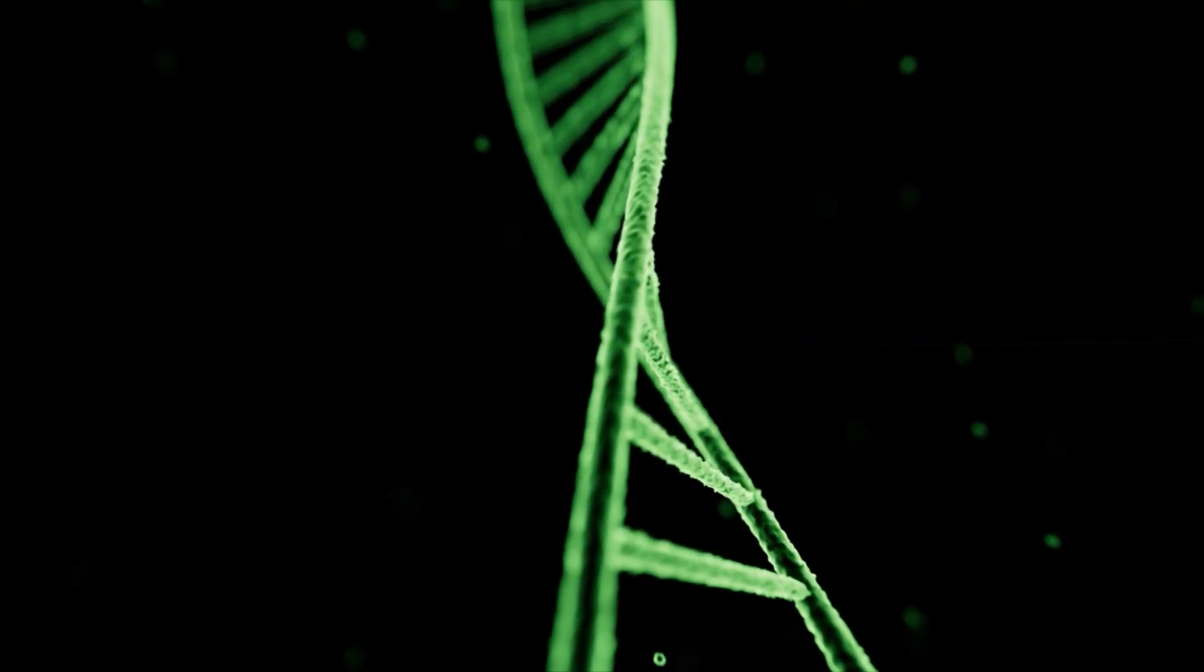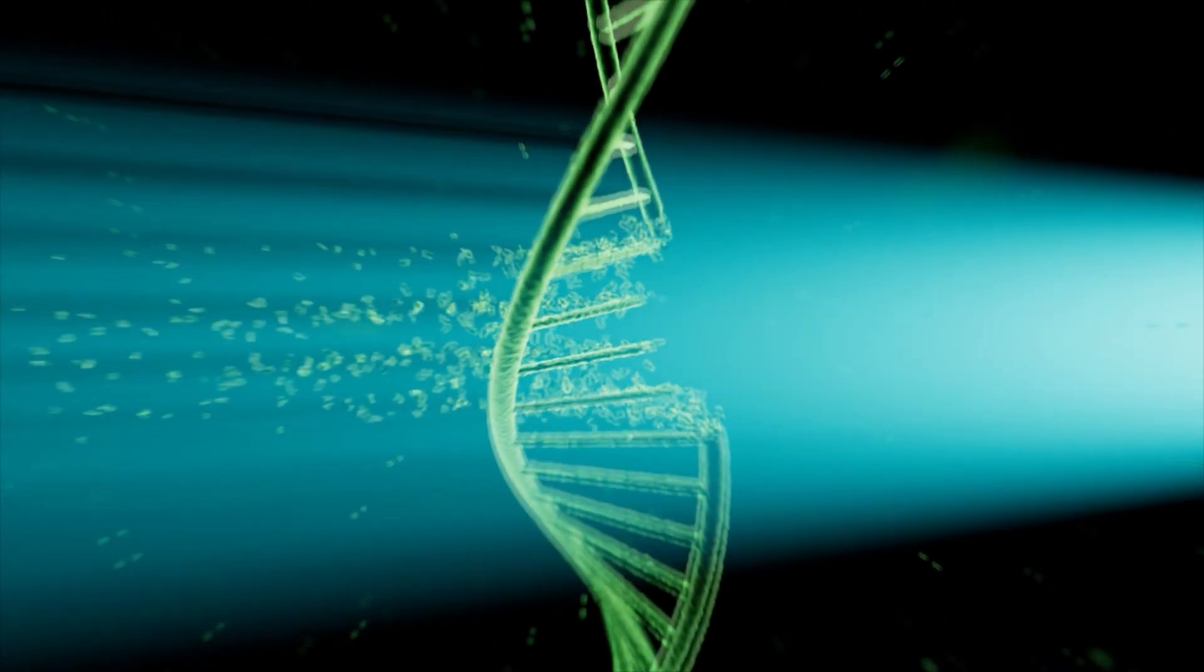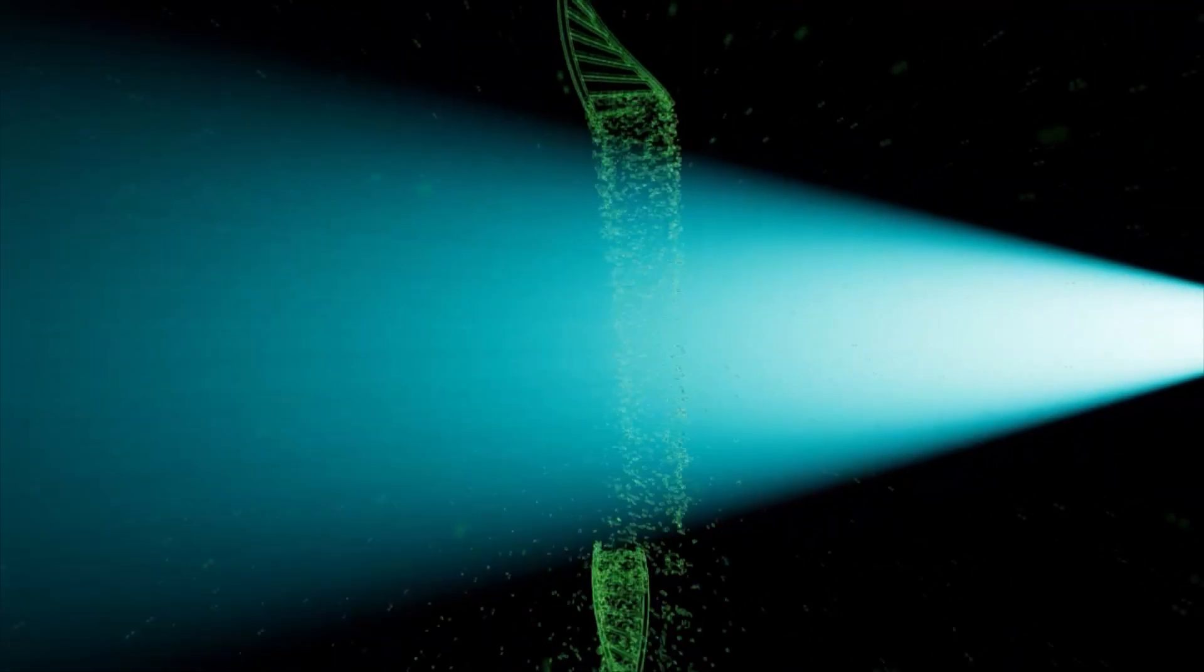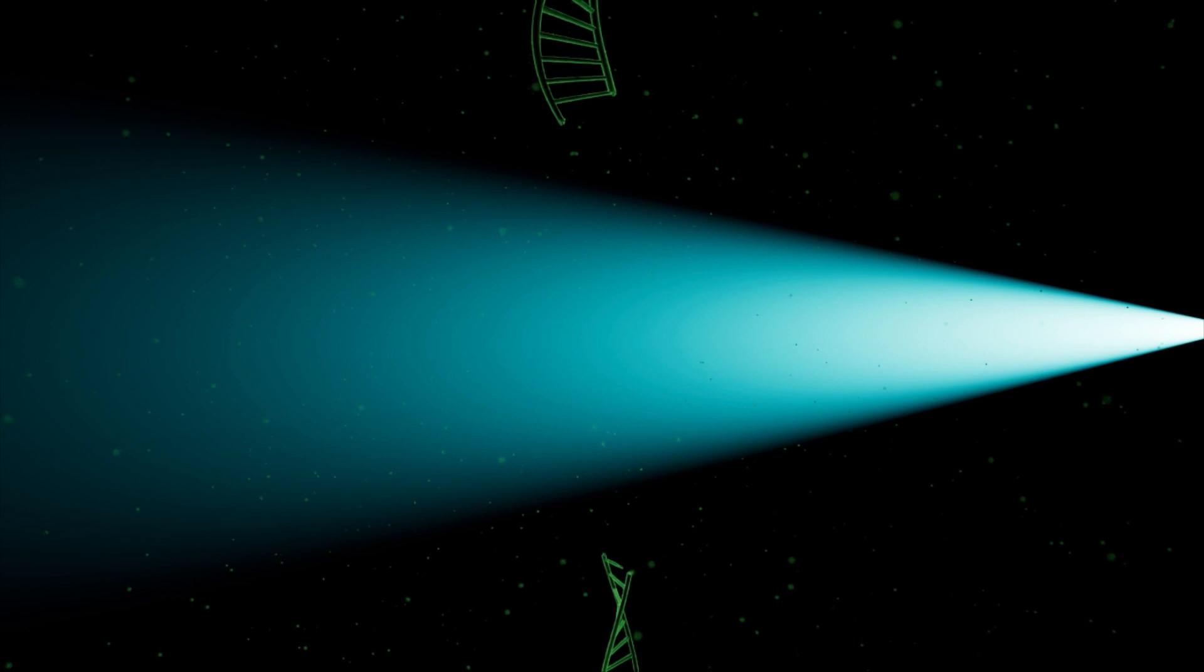UVC light works as a disinfectant because it's able to penetrate cell tissue and destroy cellular DNA, preventing their reproduction and eradicating up to 99% of all microorganisms.